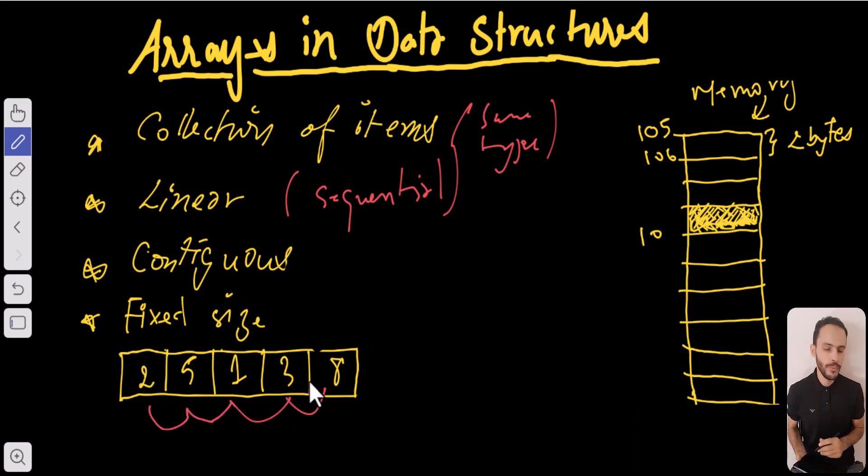And the third characteristic about arrays is that they are contiguous. We mean by contiguous that they are put in memory in adjacent locations.